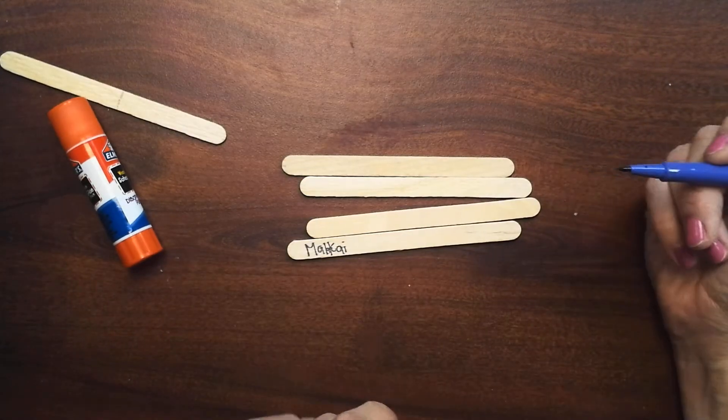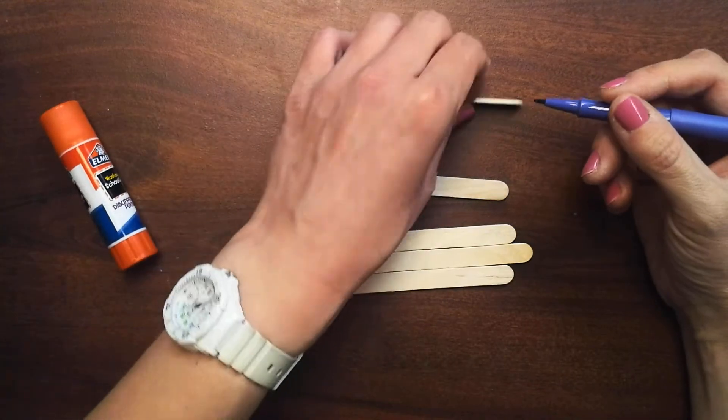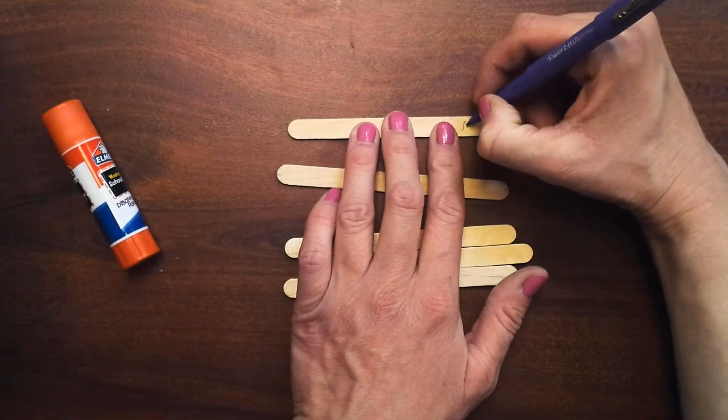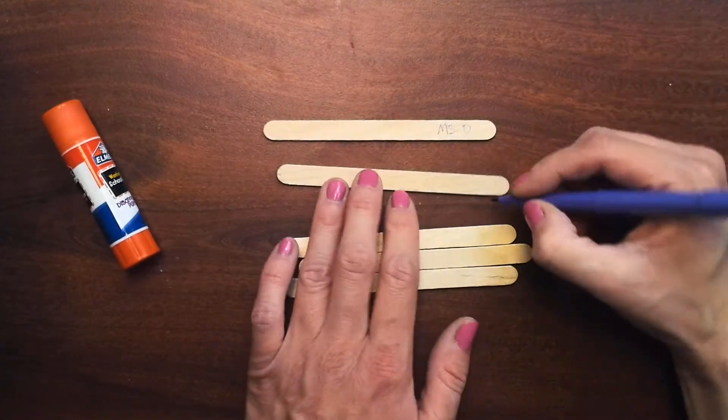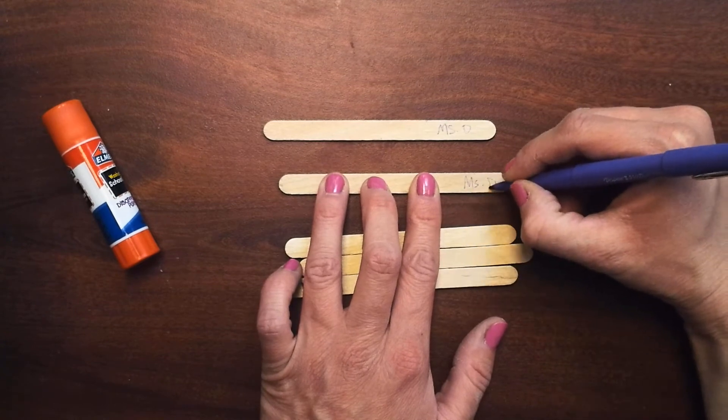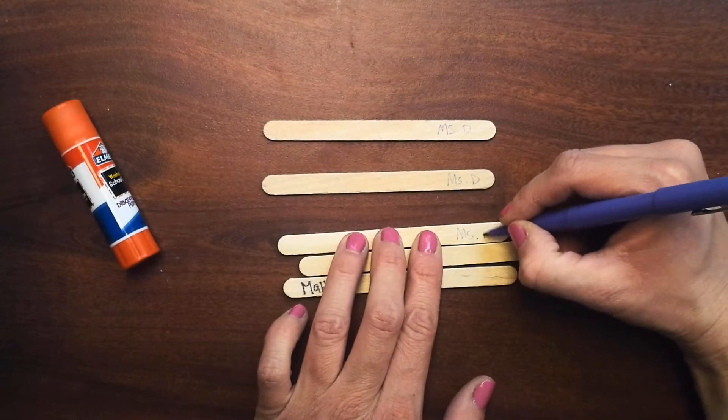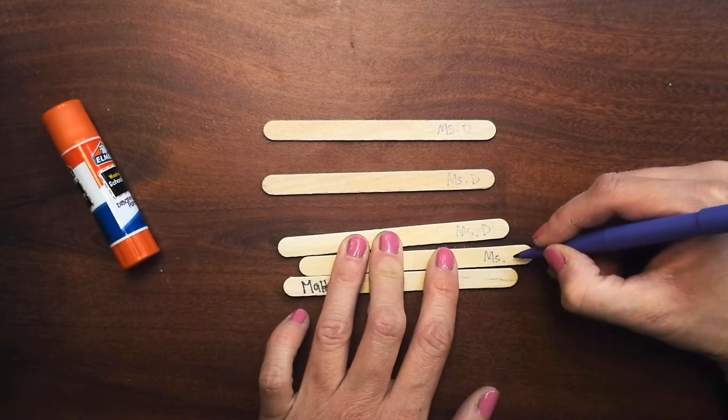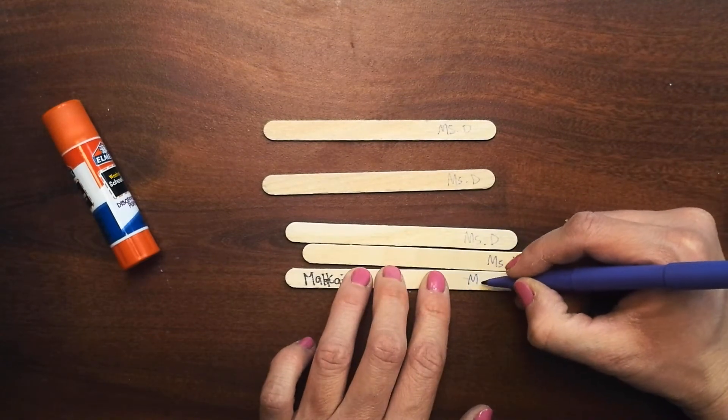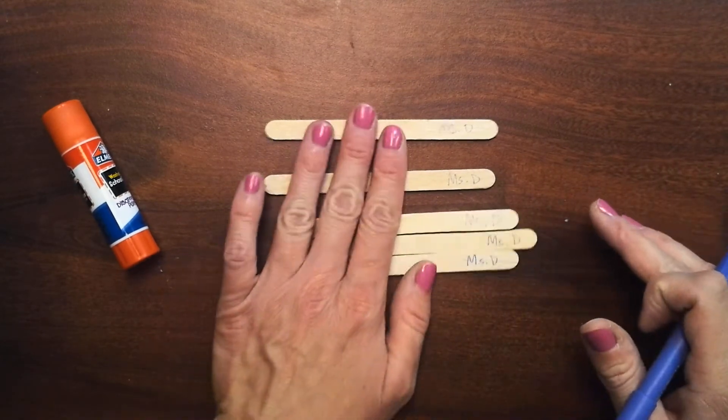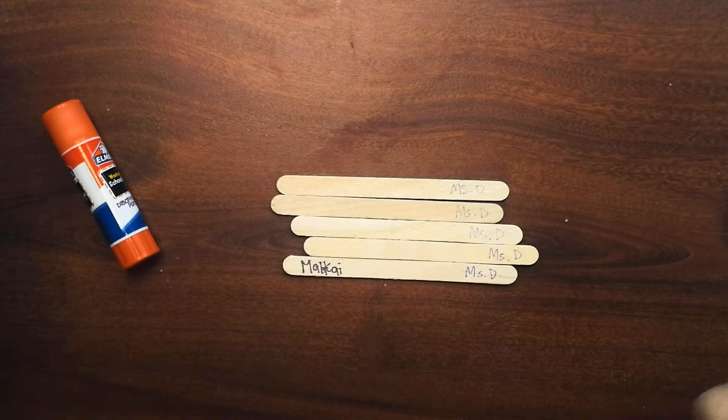Then I need to make sure to write my name on the back of all five of my popsicle sticks just in case they get lost. So you're writing your name on how many sticks? Five, good job. If you don't finish decorating all of your five sticks today, that is okay. We'll have more time next time.